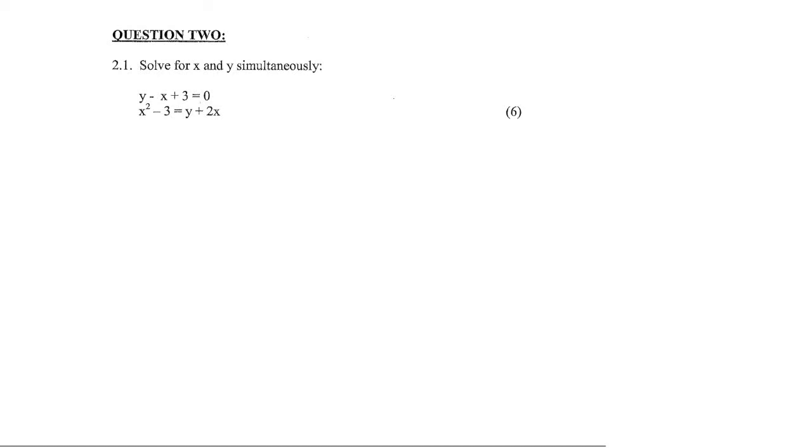Here we have a simultaneous question for six marks. Now remember, for a simultaneous one of the easiest ways is the following. Step one, find the easiest looking equation. So that would be the top one.